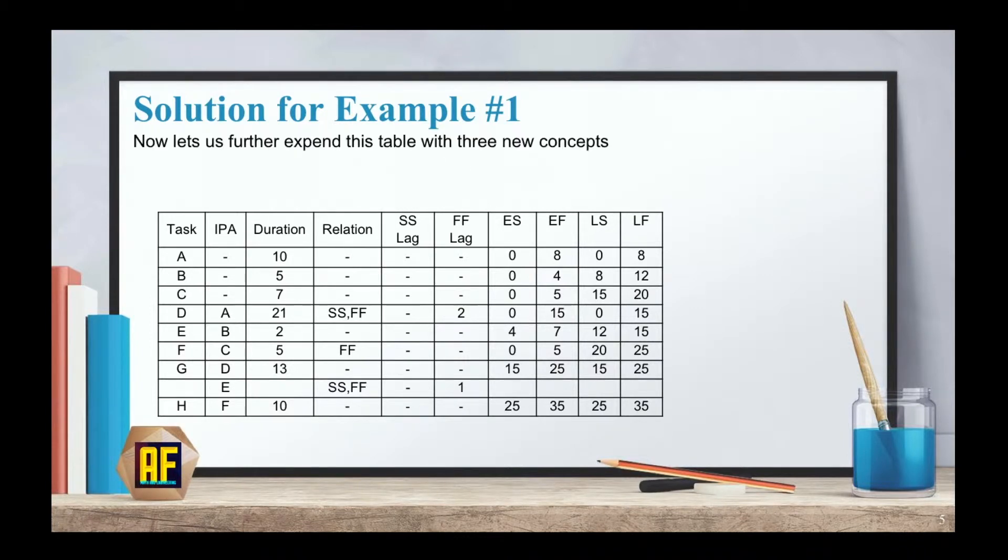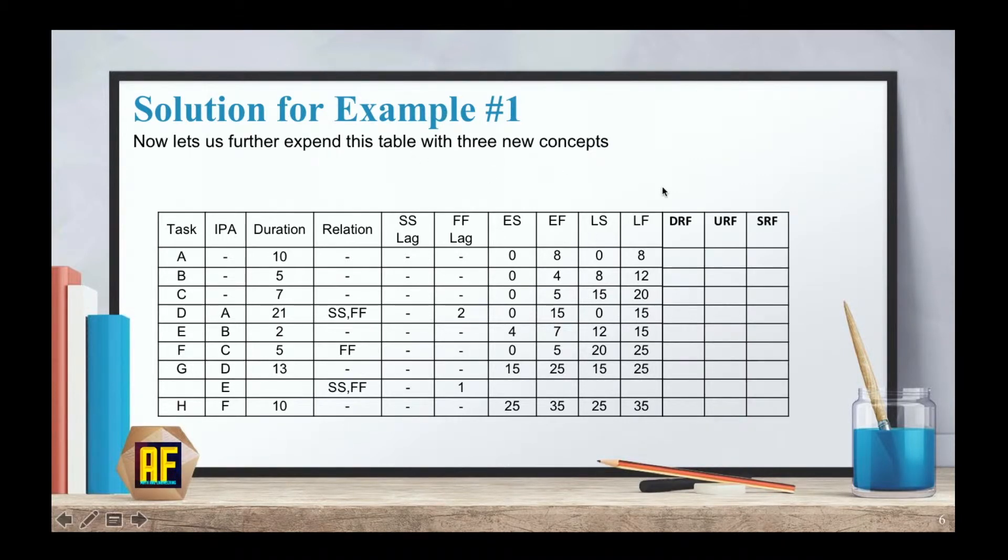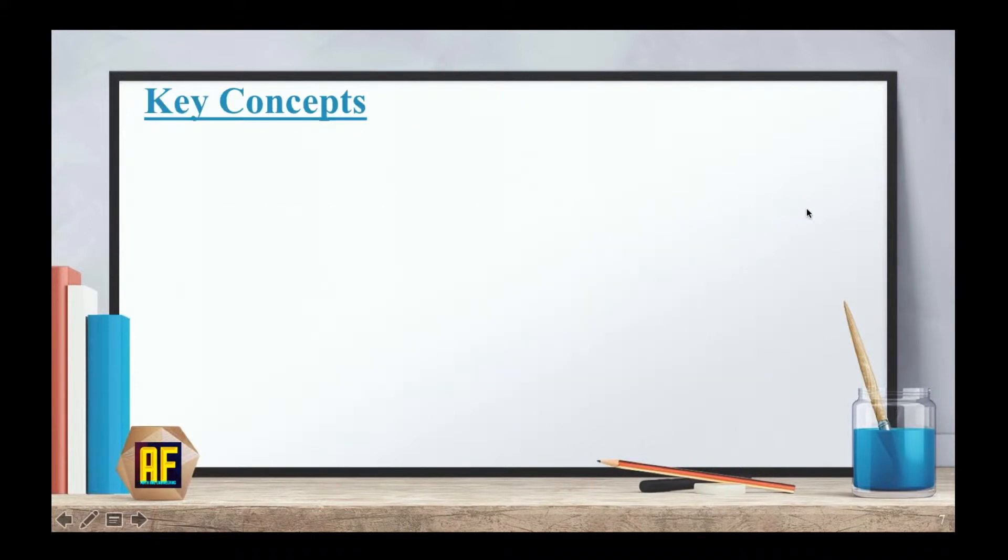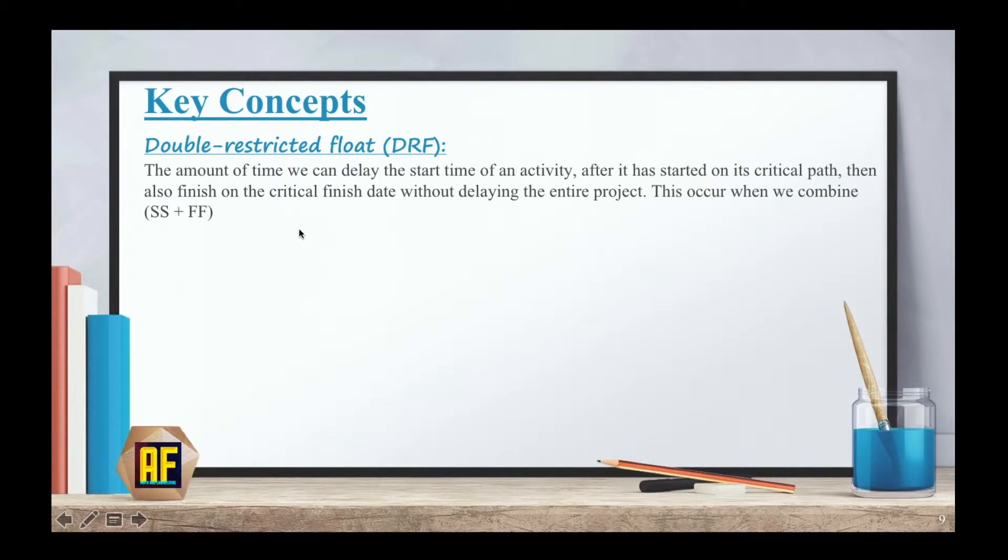Now let us further expand this table with three new concepts: DRF, URF and SRF. The DRF, double restricted float, is the amount of time we can delay the start time of an activity after it has started on its critical path, then also finish on the critical finish date without delaying the entire project. This occurs when we combine start to start and finish to finish together.